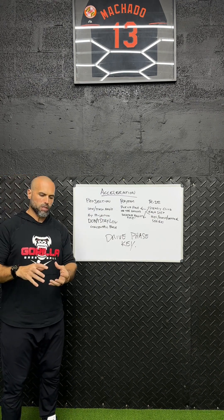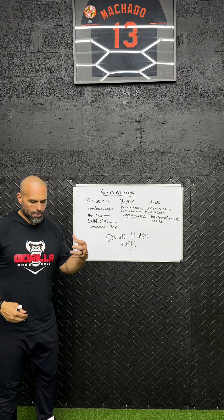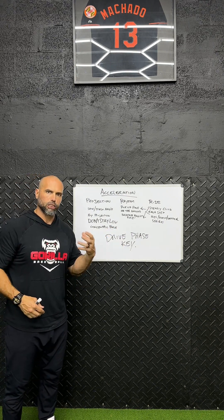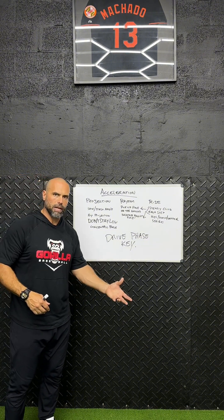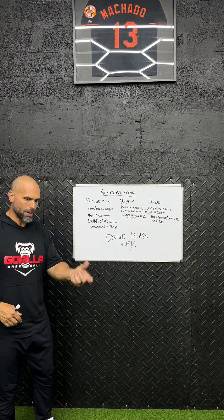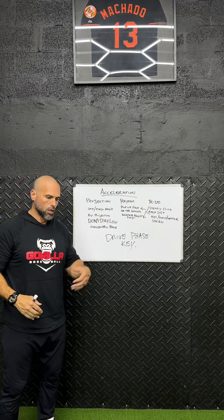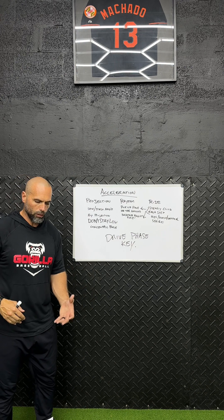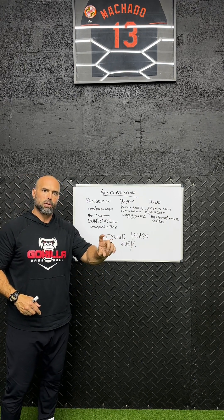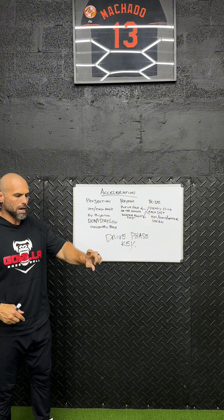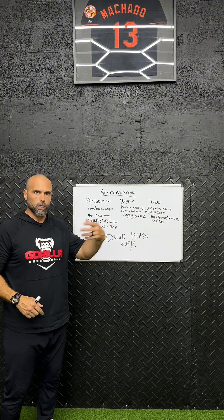Rhythm falls right into projection because as I get myself out into space, the amount of time I have on the ground is going to automatically shrink. My first couple steps, I may be on the ground longer than I'm in the air. After that, it automatically switches and keeps progressing. So steps one and two, I may be on the ground a little bit longer than in the air. By step three, that formula is already inverted — I'm spending more time in the air than on the ground. By steps five, six, seven, much more so.